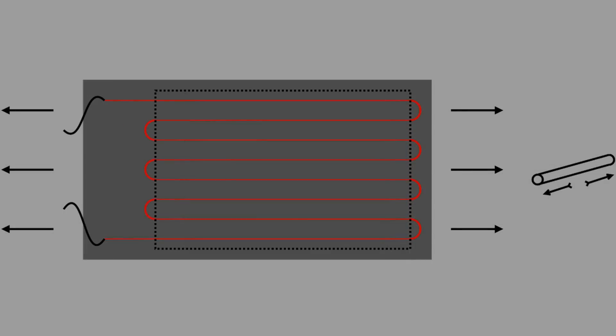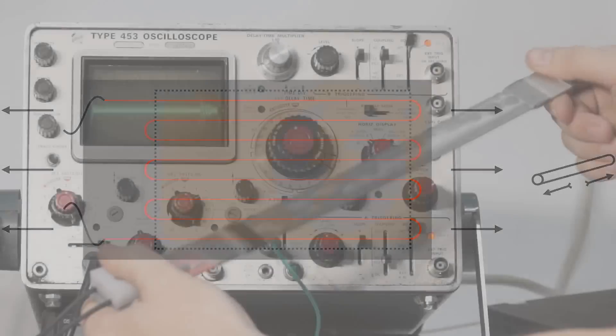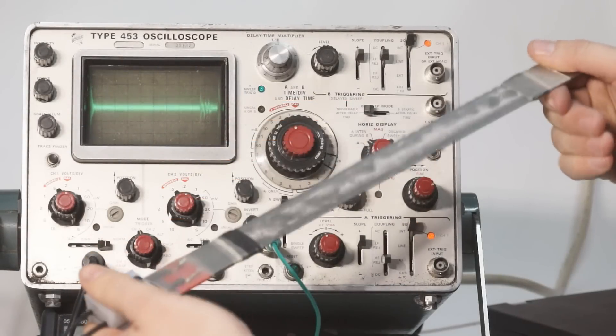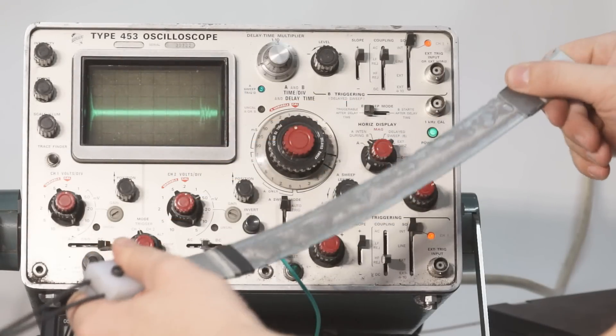When the substrate is stretched, the wires which are strongly bonded begin to stretch as well. This causes the wires to narrow very slightly but in a linear and repeatable way. This stretching increases the resistance of the copper wire and can be measured.